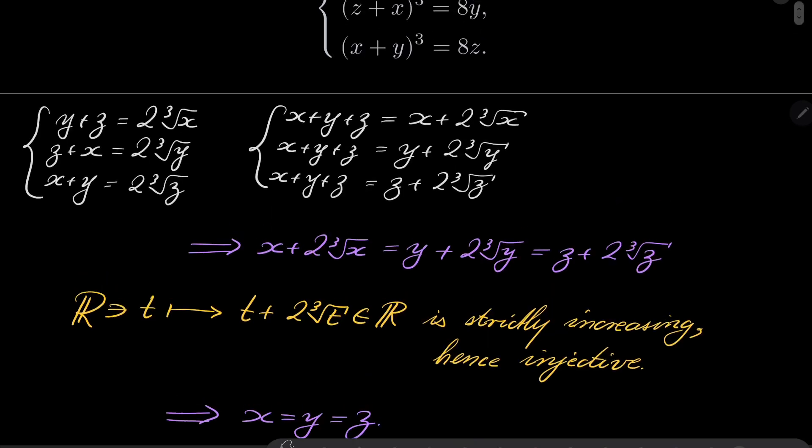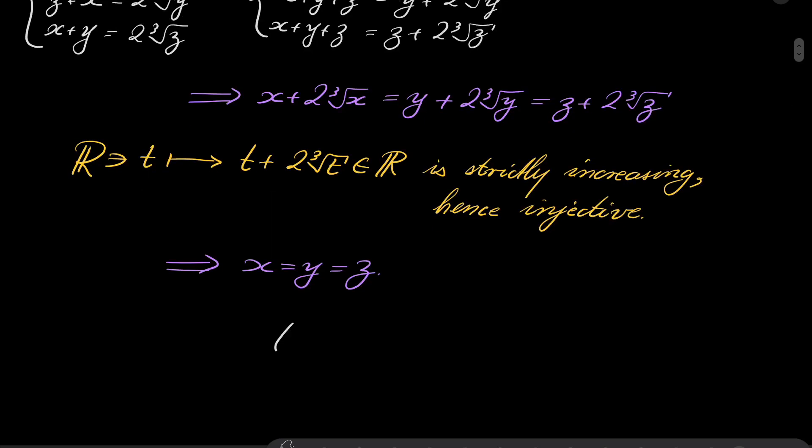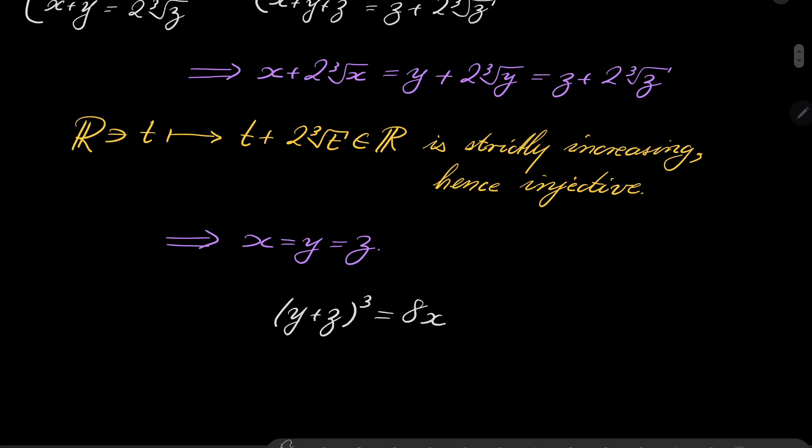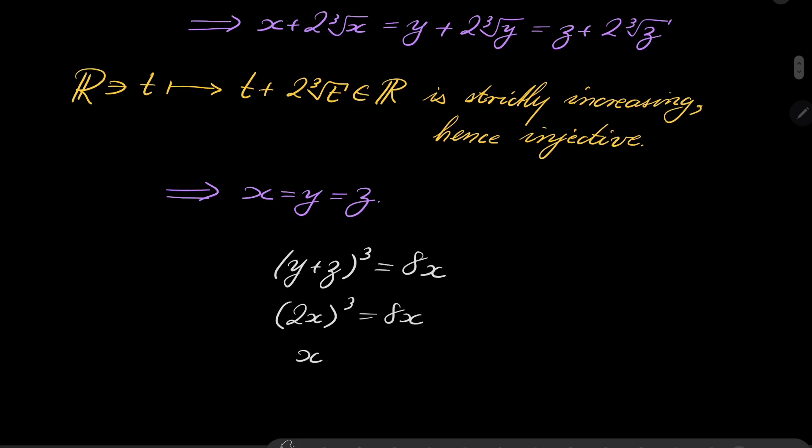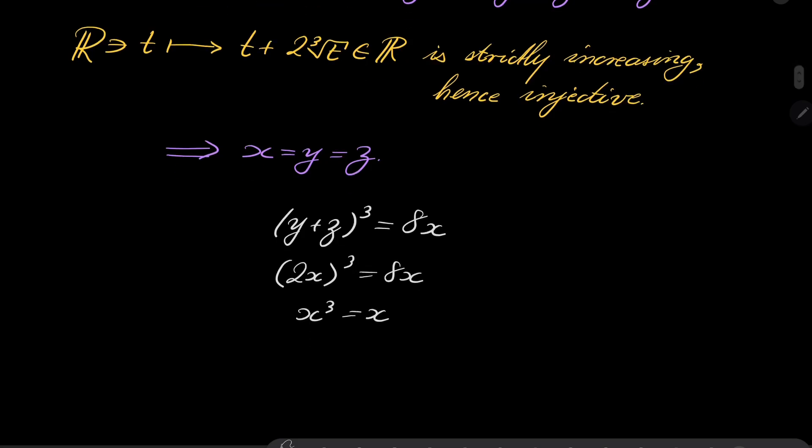So x = y = z. And now, let's go back to our very first equation. It suffices to solve the very first equation. Let's put instead of y and z, let's put x, so 2x³ = 8x. So x³ = x, and we have three solutions.